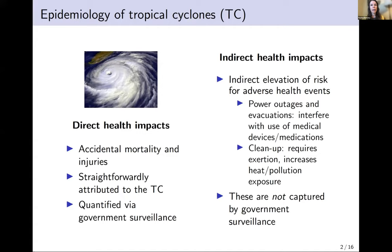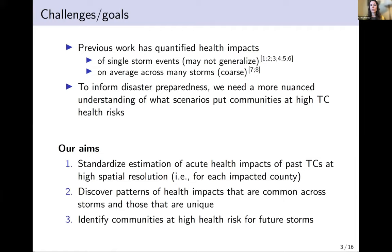These indirect health impacts are generally not captured by government surveillance in the US. Previous epidemiologic work has focused on quantifying total health impacts — both direct and indirect — usually of single storms or, more recently, the average health impacts across many storms. Individual storms tend to be really heterogeneous in their impacts, so single-storm epidemiology doesn't generalize well. Conversely, the average across storms is too coarse a measure to be useful for strategic disaster preparation.